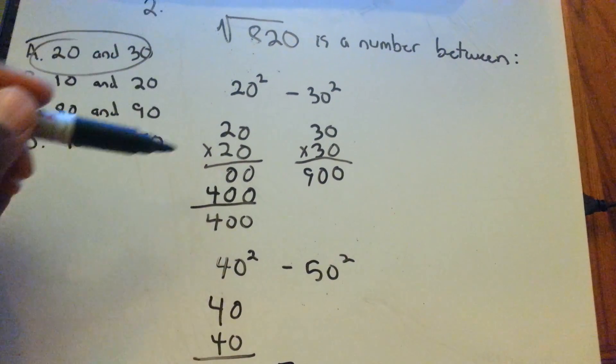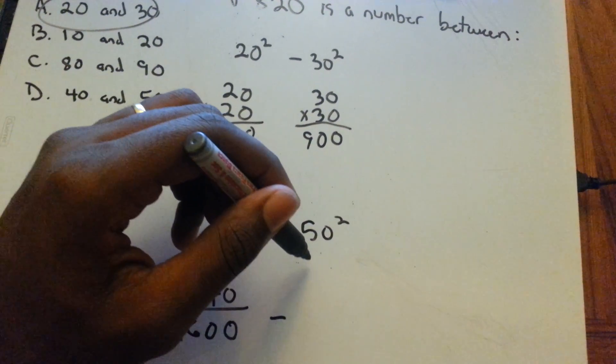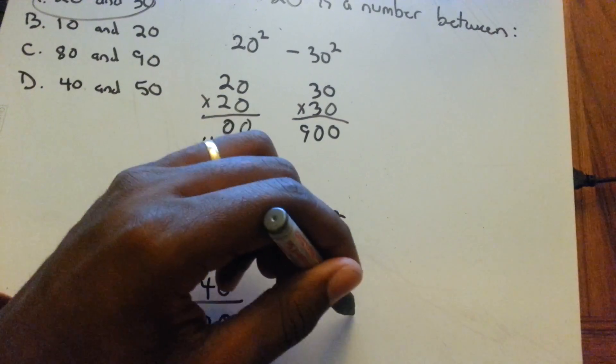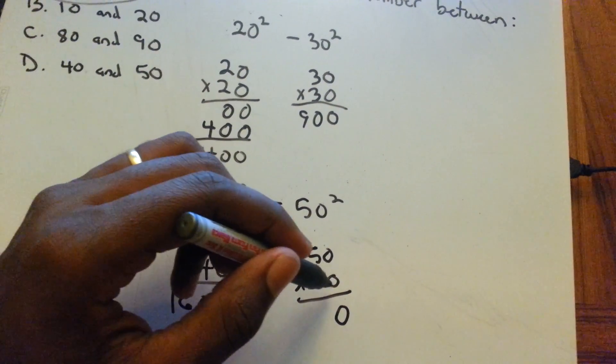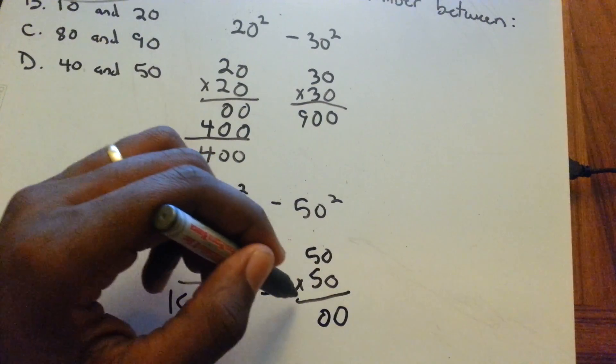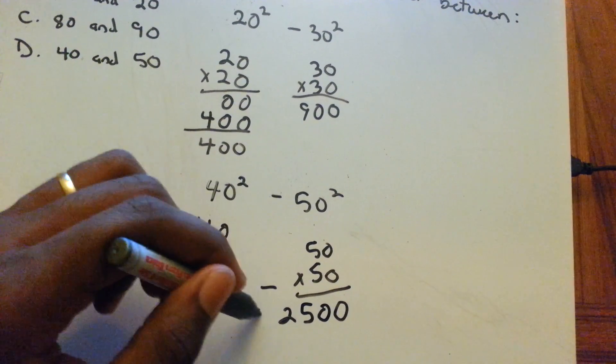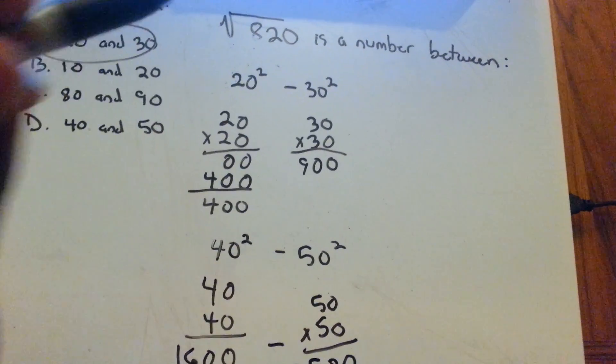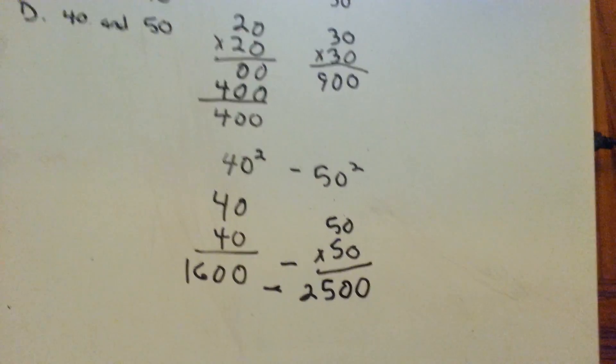The number we're looking for is 820, but I'll keep going anyway just for you guys. 50 squared - 50 times 50 - put the 0 placeholder, 5 times 5 is 25, so that's 2,500. So 820 is not between 1,600 and 2,500.